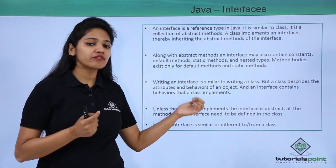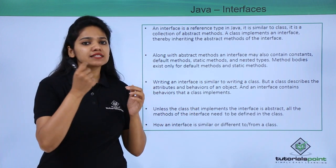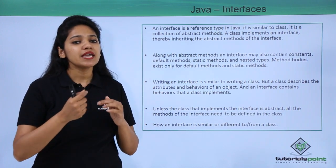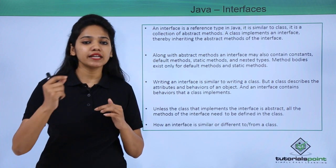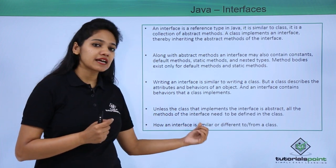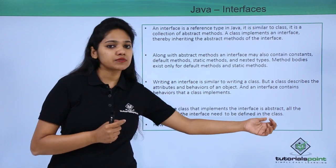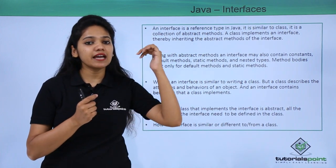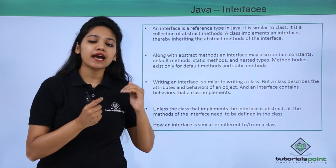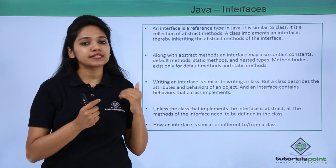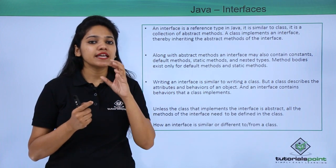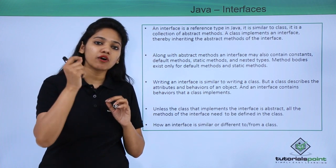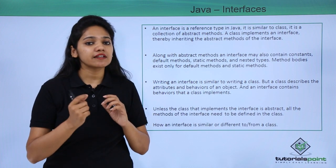Writing an interface is similar to writing a class: you write the interface keyword and the interface name, then declare the methods you want defined in your class. Unless the class implementing the interface is itself abstract, all methods need to be defined. If a class extends an abstract class, it must define all abstract methods unless it is itself abstract. Similarly, a class implementing an interface must define all the interface's abstract methods, unless the class itself is abstract.